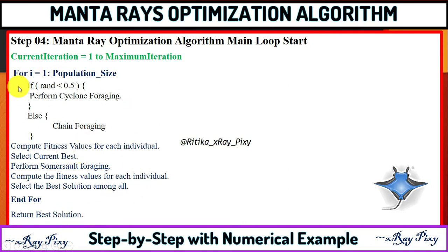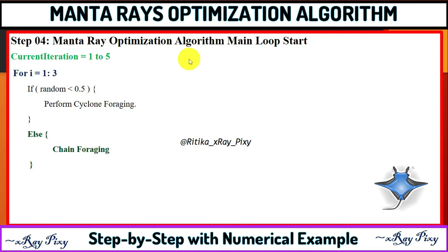This is the for loop running from 1 to population size, and we repeat this loop until the condition is satisfied. The current iteration runs from 1 to 5, where 5 is the maximum number of iterations, so we repeat this loop until that condition is met.